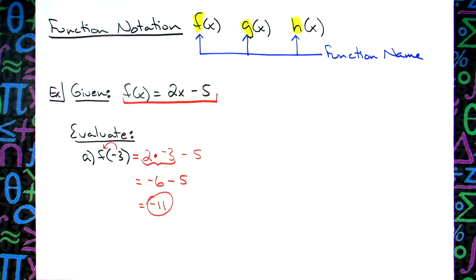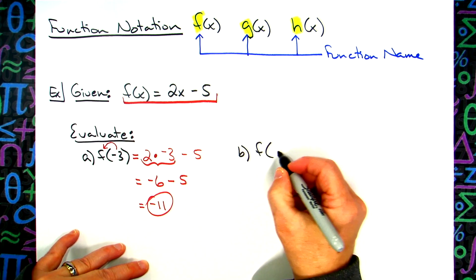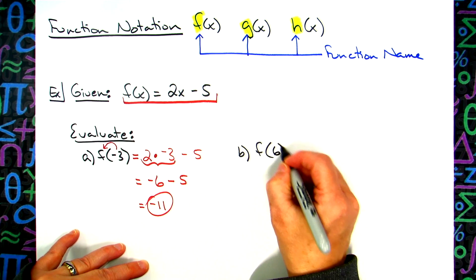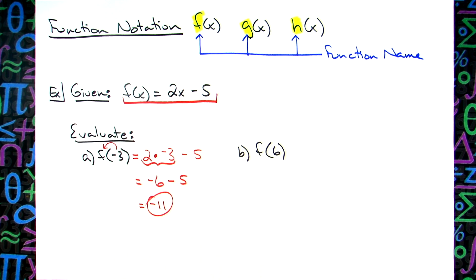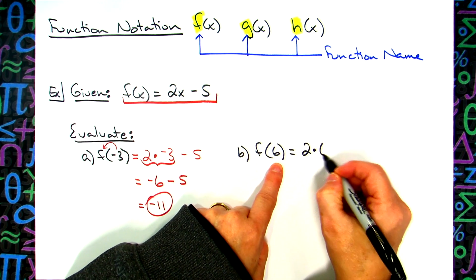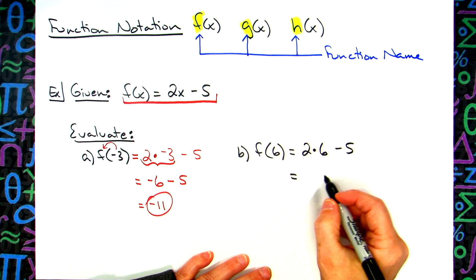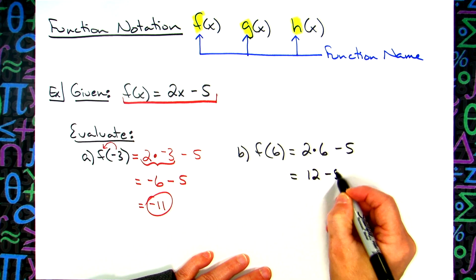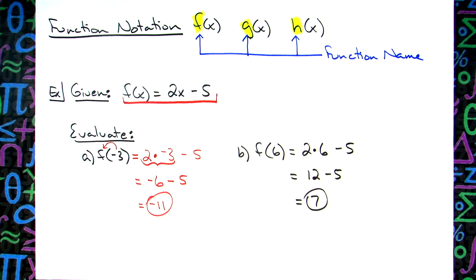Let's do another example: f(6). That tells me to take 6 and plug it in for x. My function says 2 times x, so I replace x with 6: 2 times 6 is 12, minus 5 gives 7. Function notation is pretty simple. Now let's take this idea of function notation and connect it to domain and range.